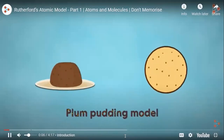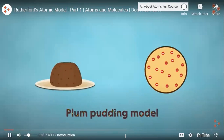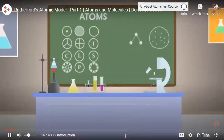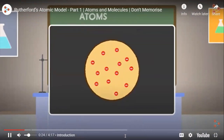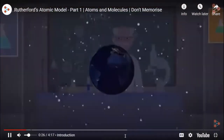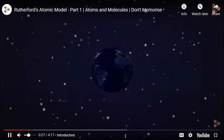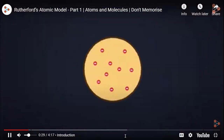The plum pudding model of an atom was one of the most widely accepted models all over the world for understanding the structure of the atom. However, several experiments performed by scientists to study the atomic structure showed astonishingly different results — they were contradicting the plum pudding model. This led many scientists all over the globe to reconsider the structure of an atom and study it again.